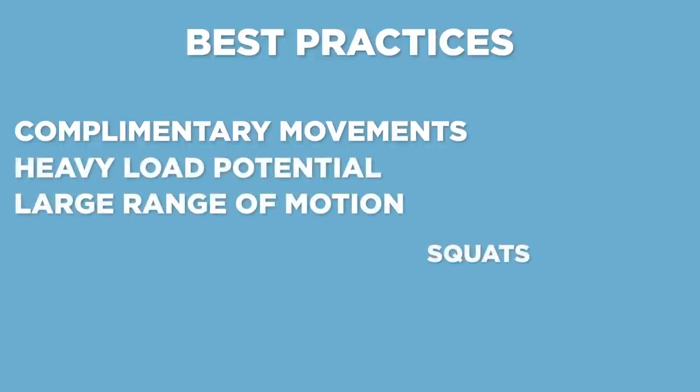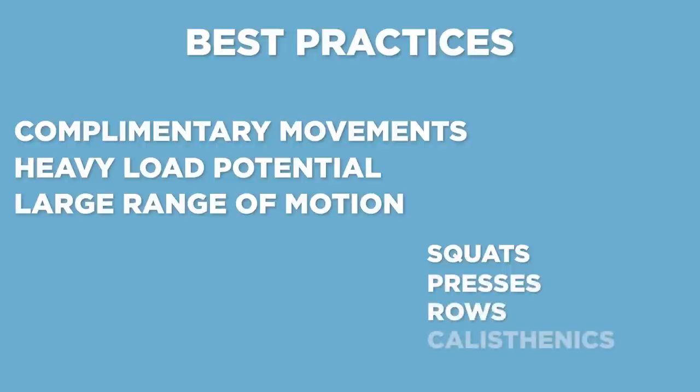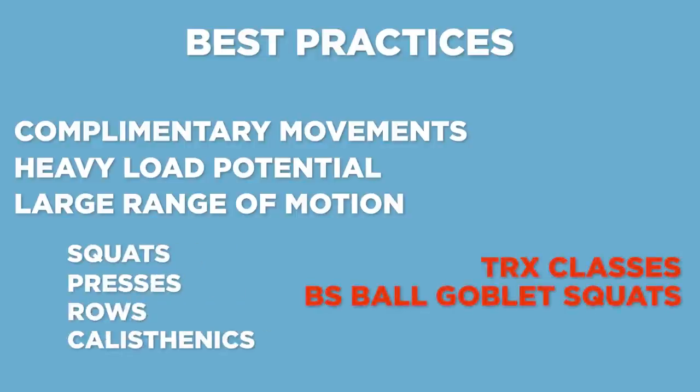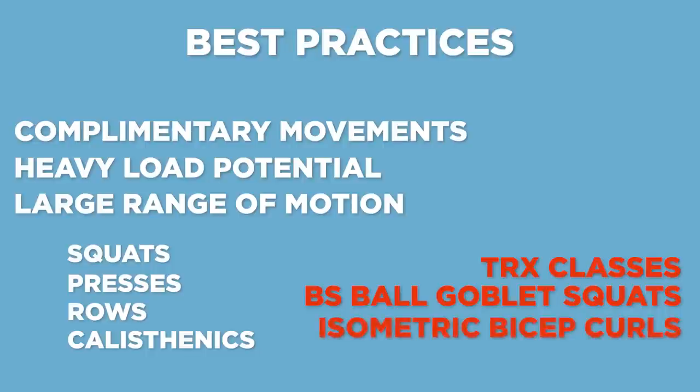Good choices for phase 2 strength movements include squats, presses, rows, and weighted bodyweight movements. Things that don't really work as strength movements are TRX classes, BOSU ball goblet squats, and isometric bicep curls. Big bang-for-your-buck movements, complemented with some auxiliary movements, will take you a long way here.